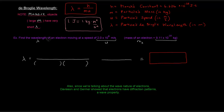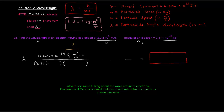H is Planck's constant: 6.626 times 10 to the negative 34. We write it as 1 kilogram times meters squared per second squared times seconds — because that portion is a joule. On the bottom, the mass is 9.11 times 10 to the negative 31 kilograms, and the particle speed is 2.0 times 10 to the 6 meters per second.